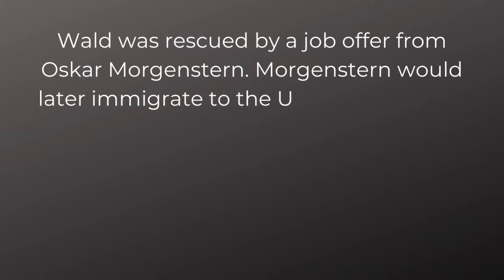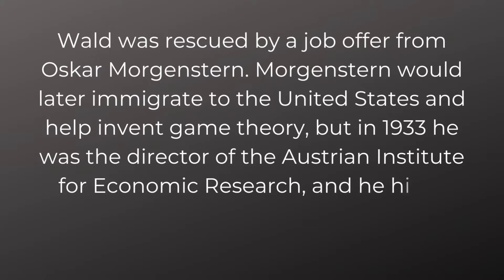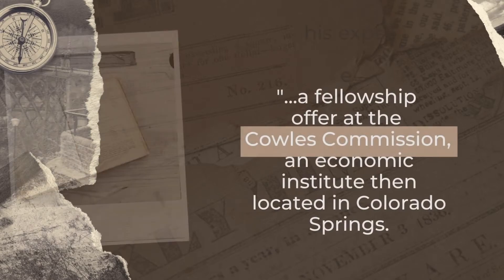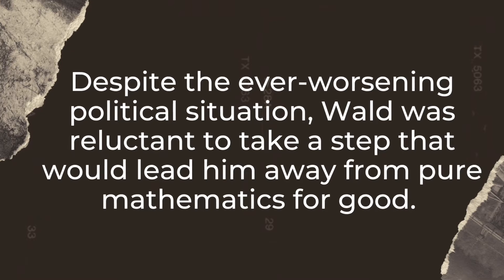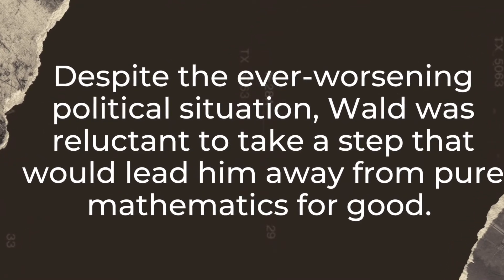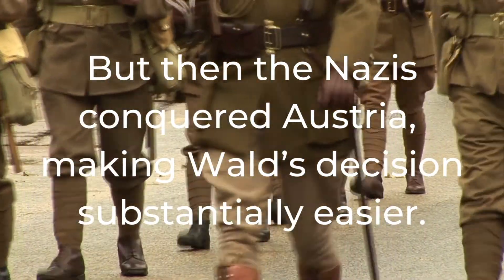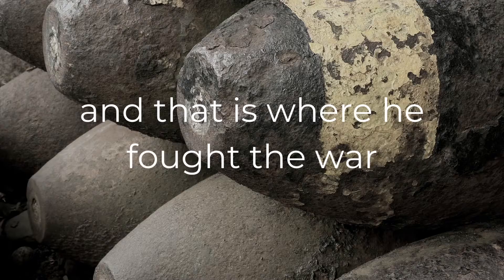Wald was rescued by a job offer from Oskar Morgenstern, who would later immigrate to the United States and help invent game theory. But in 1933, he was the director of the Austrian Institute of Economic Research and hired Wald at a small salary to do mathematical odd jobs. His experience in economics got him a fellowship offer at the Cowles Commission, an economic institute then located in Colorado Springs. Despite the ever-worsening political situation, Wald was reluctant to take a step away from pure mathematics — but then the Nazis conquered Austria, making his decision substantially easier. After just a few months in Colorado, he was offered a professorship of statistics at Columbia University. He packed up and moved to New York, and that is where he fought the war.